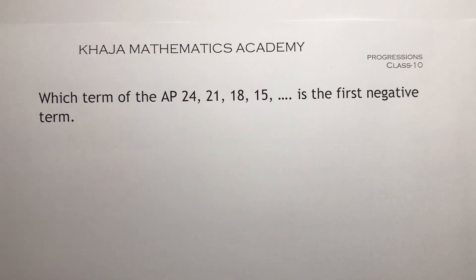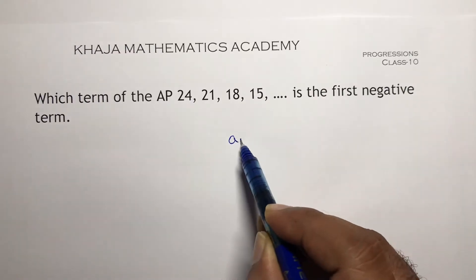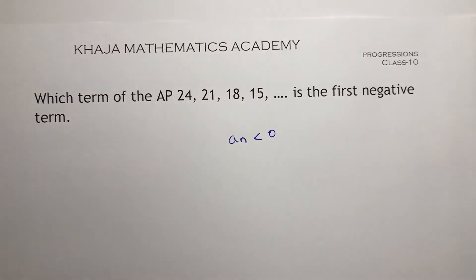Which term of the AP 24, 21, 18, 15 is the first negative term? To find the first negative term, the negative term will be like an will be less than 0.